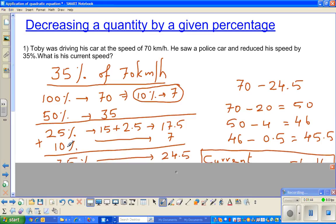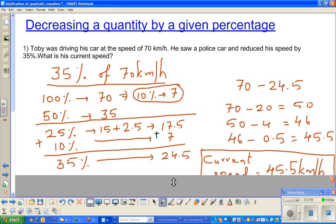Now we have already got this 10% previously, which is 7. 25% is 17.5 and 10% is 7, so we need to add these two. What do we get? We get 35% is this plus this, which is 24.5.